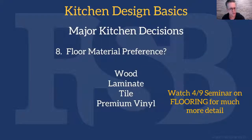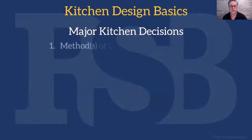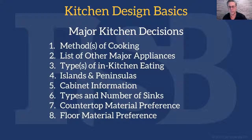In two weeks we're going to cover flooring in more detail — not just these, but flooring in general, so look for that seminar. So once again: the method of cooking, the list of other major appliances, the types of in-kitchen eating, whether there will be an island or peninsula, the cabinet information we covered, the types and number of sinks, countertop material preference, and floor material preference. This is the information to put together whenever you're considering a kitchen remodel, because your kitchen designer, architect, and building contractor will be able to use that checklist to great advantage.